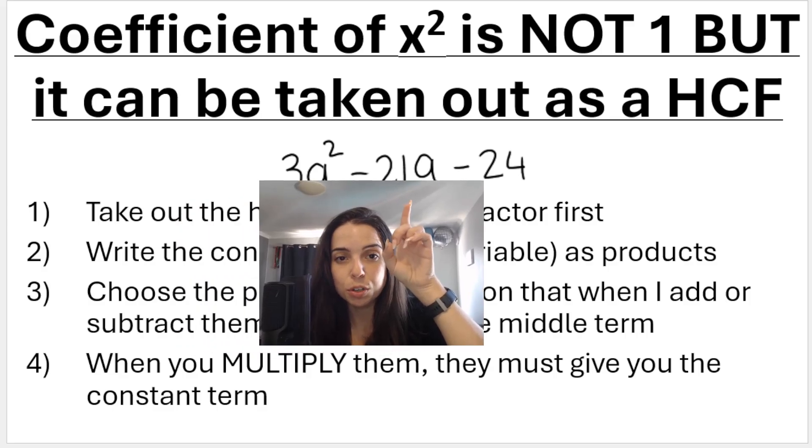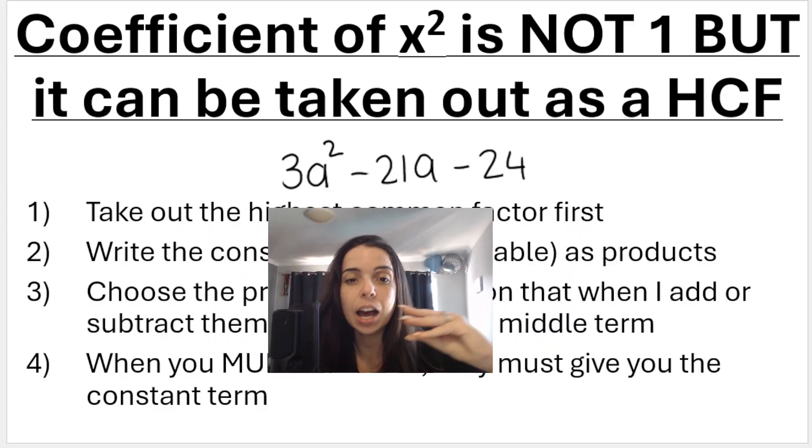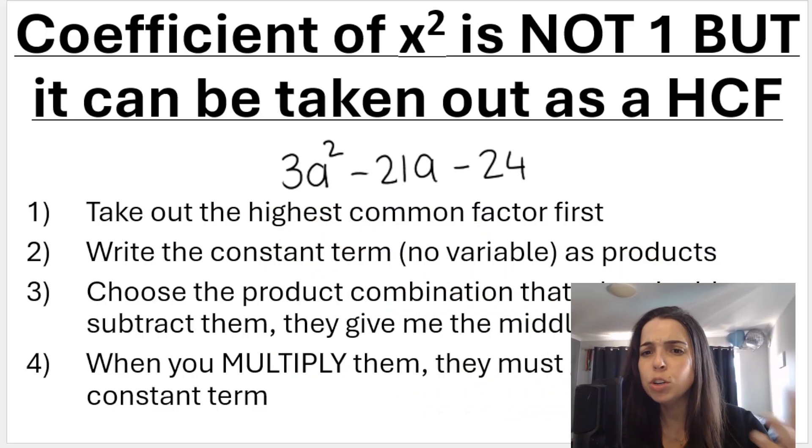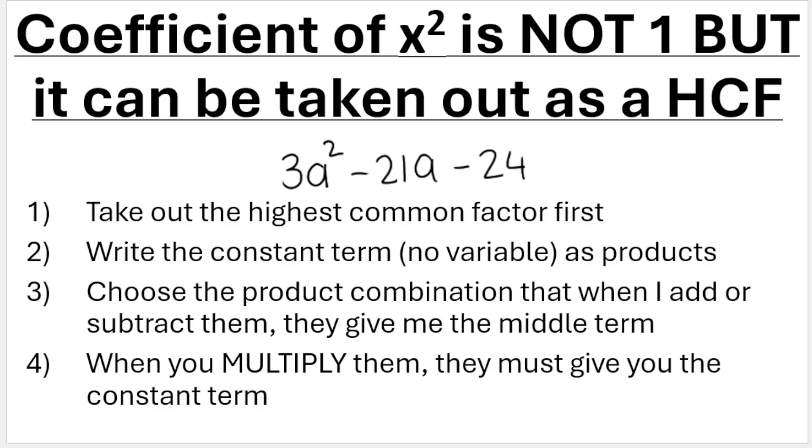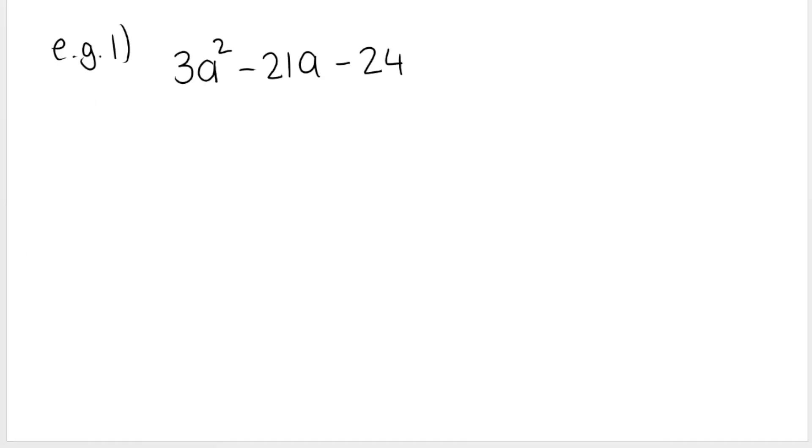So if you assess the three terms over here, we can take out a 3 as my HCF, my highest common factor, and then we do the trinomial like normal. So here are the steps, let's do a few. So looking at the first example, the one that I showed now, we know that we always need to try highest common factor first.